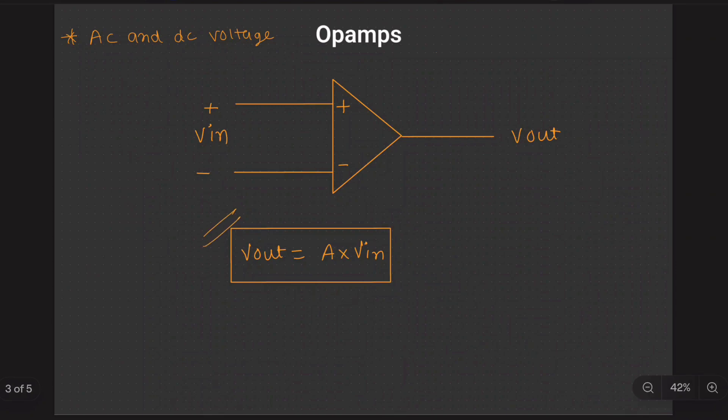This Vout is written as gain which is the open loop gain of an op-amp. We will see what is this open loop and all.